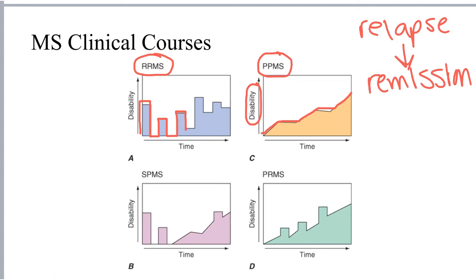Lastly, the least common clinical course at initial diagnosis is progressive relapsing MS, or PRMS. This is characterized as steadily progressive from the onset of the disease, with the additional occurrence of exacerbations or attacks that might partially remit, but there is steadily progressing disease severity over time as well.